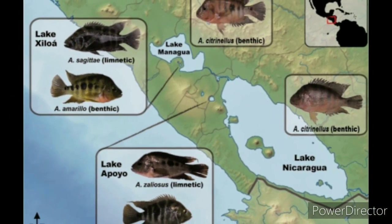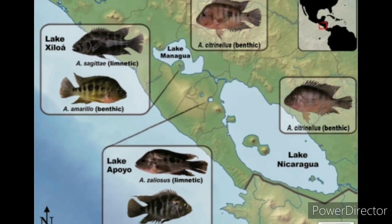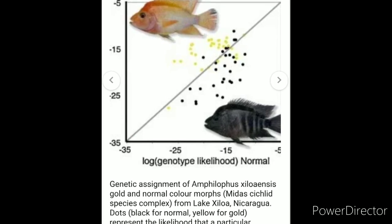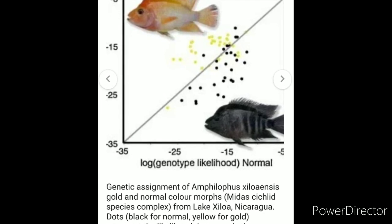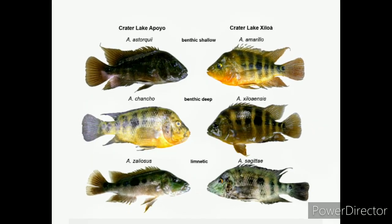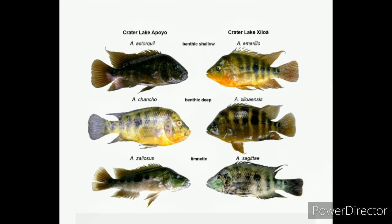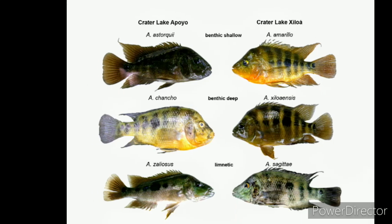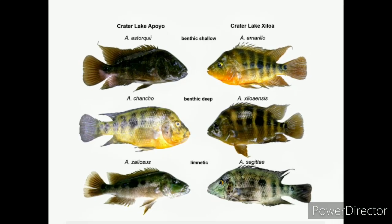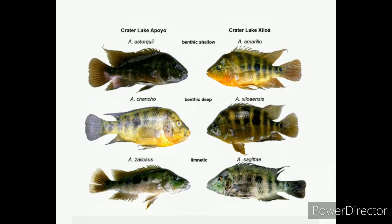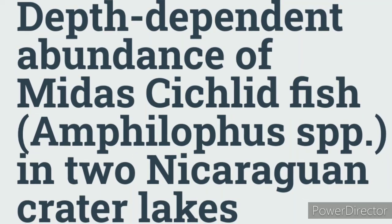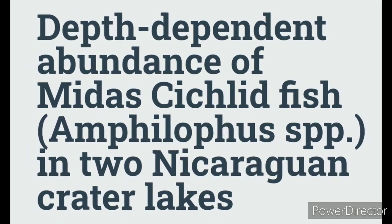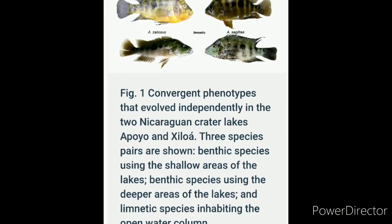Some of you may be asking how that's possible — allow me to explain without going into a detailed scientific analysis. Let's start with the word "benthic," a scientific term used to describe the physical parameters underwater such as depth. Depending on whether the species prefers shallow or benthic depth, it will effectively change colors based on how much sunlight it is exposed to.